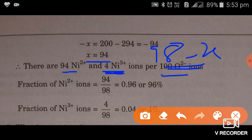Therefore the fraction can we find out. Total positive ions are 98, and Ni2+ are only 94. Therefore fraction will be 94/98 = 0.96 or 96%.